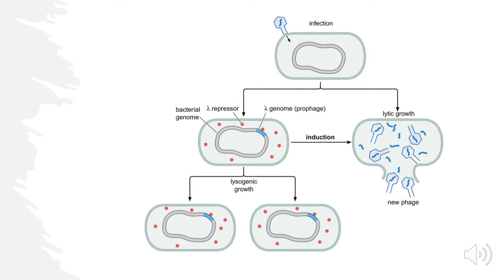Lytic growth is essentially where the bacteriophage exploits the host's machinery and resources to multiply itself and create more bacteriophages. After that, the host cell is ruptured and all the new bacteriophages are released so they can go on to infect more host cells.